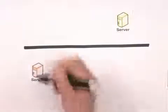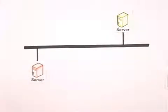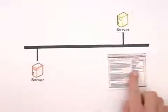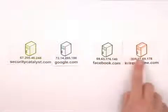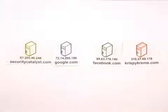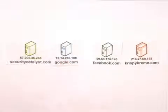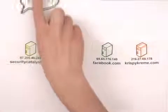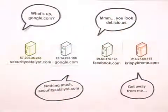The Internet is useful because two computers connected directly to this wire can communicate. A server is a special computer connected directly to the Internet, and web pages are files on that server's hard drive. Every server has a unique Internet protocol address, or IP address. Just like a postal address, IP addresses help computers find each other. But since 72.14.205.100 doesn't exactly roll off the tongue, we also give them names like Google.com, Facebook.com, or SecurityCatalyst.com.